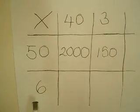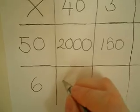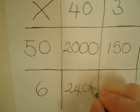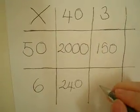40 times 6, 6 times 4 is 24. But it's 40, so that's 240. And six threes are 18.